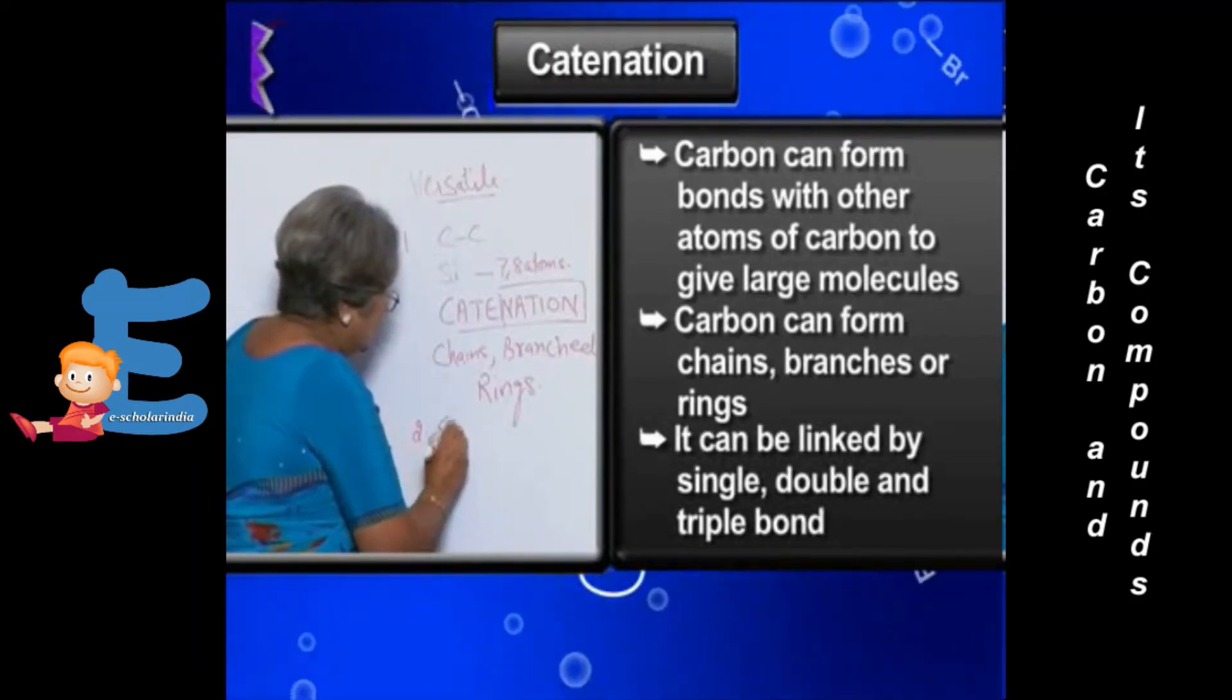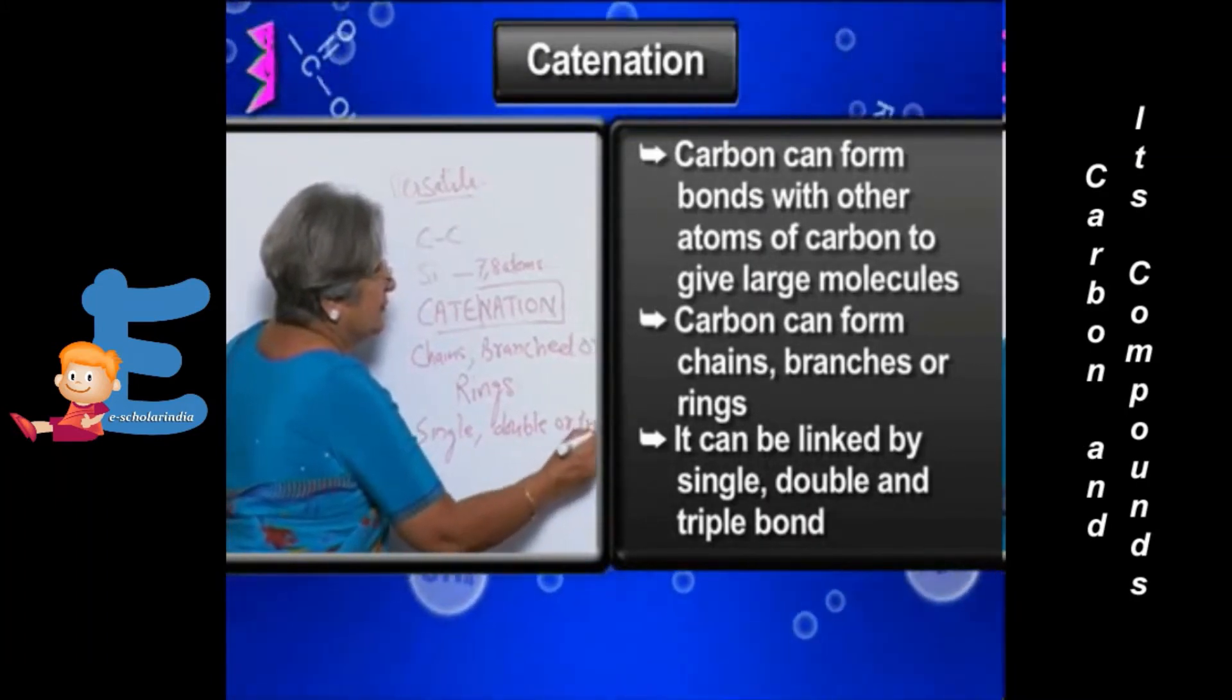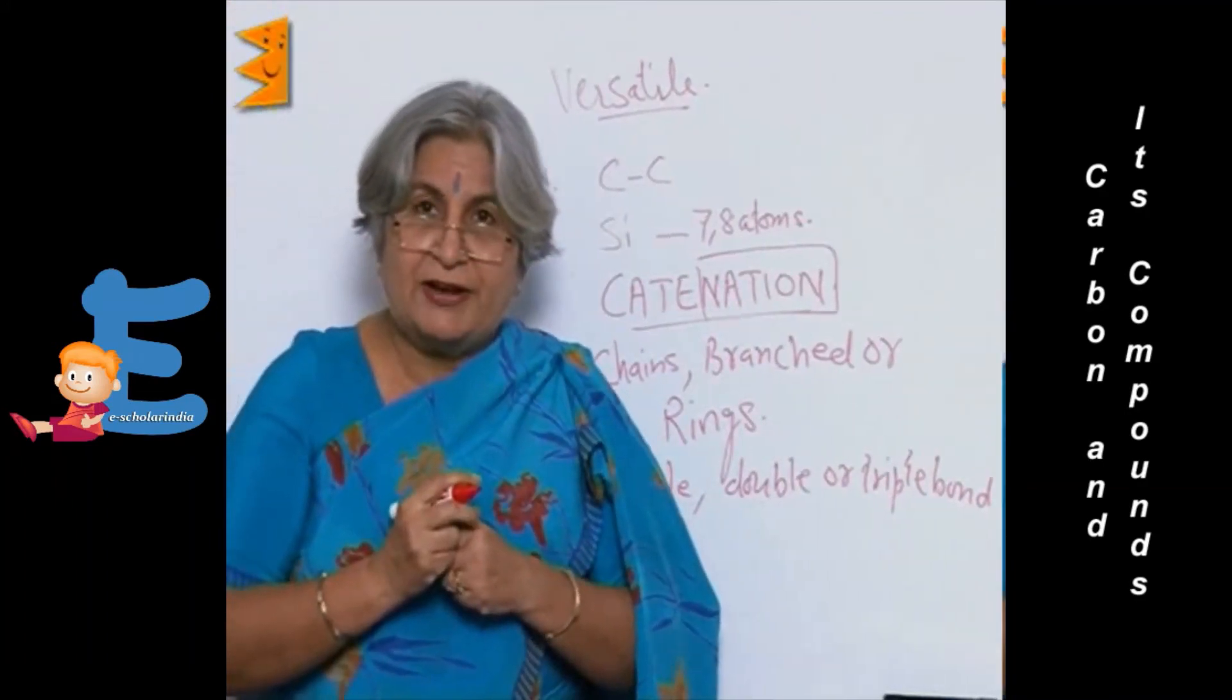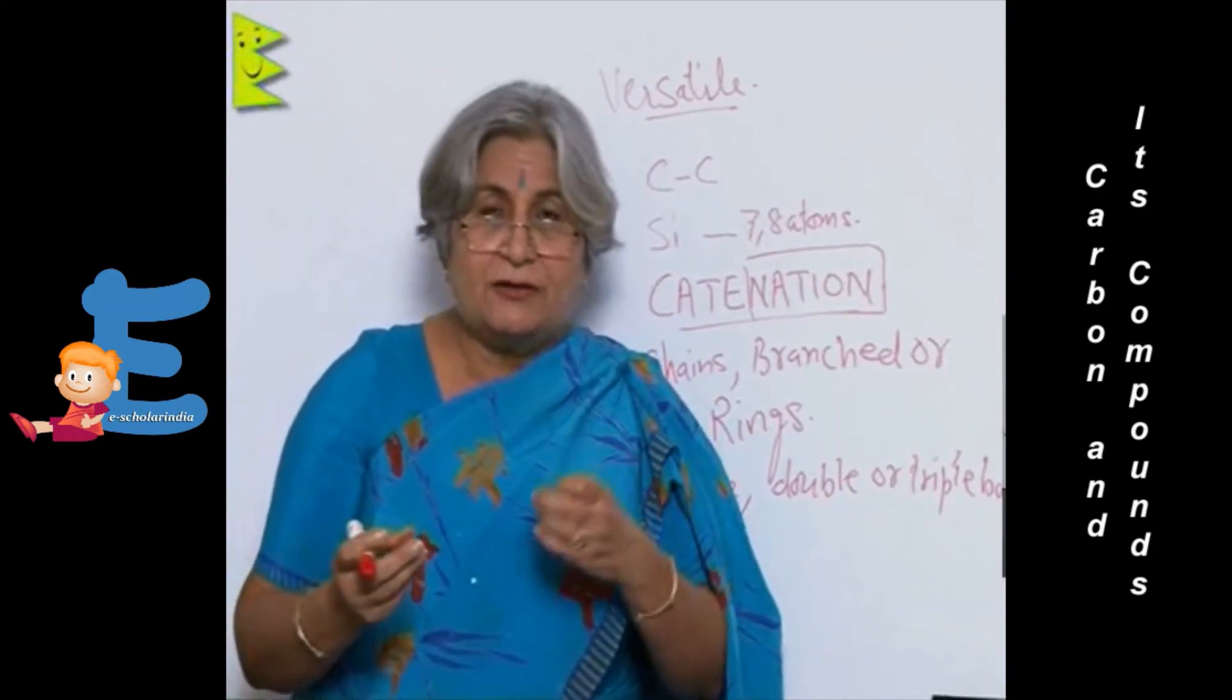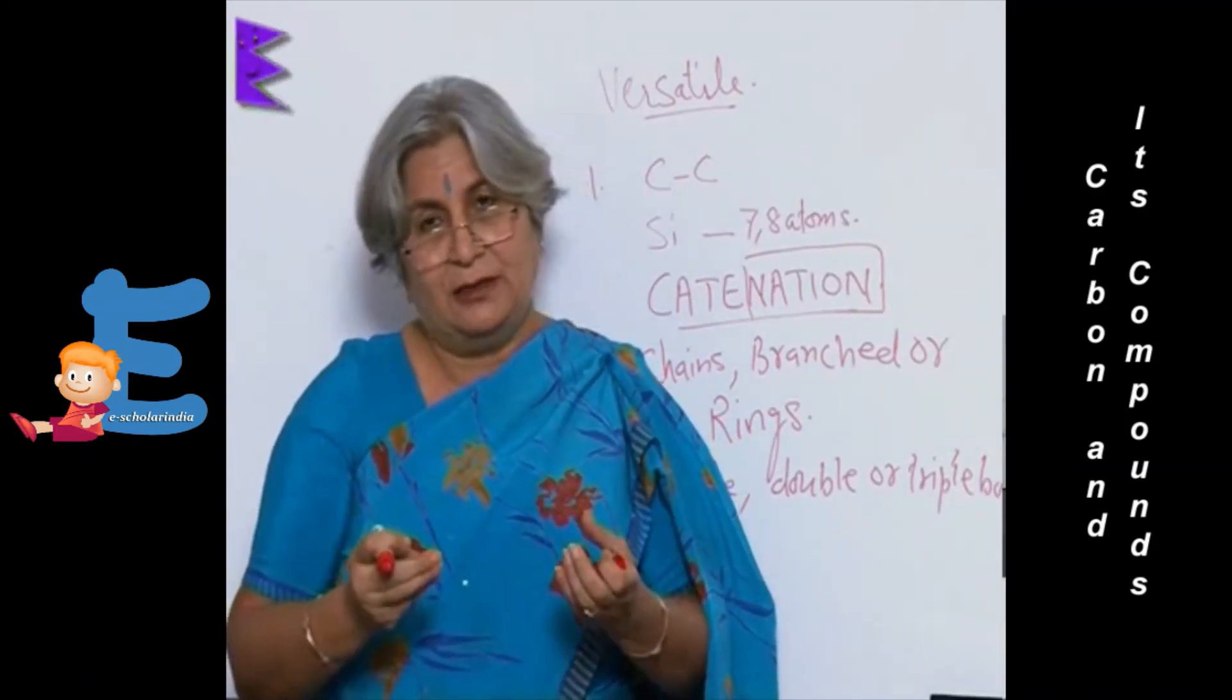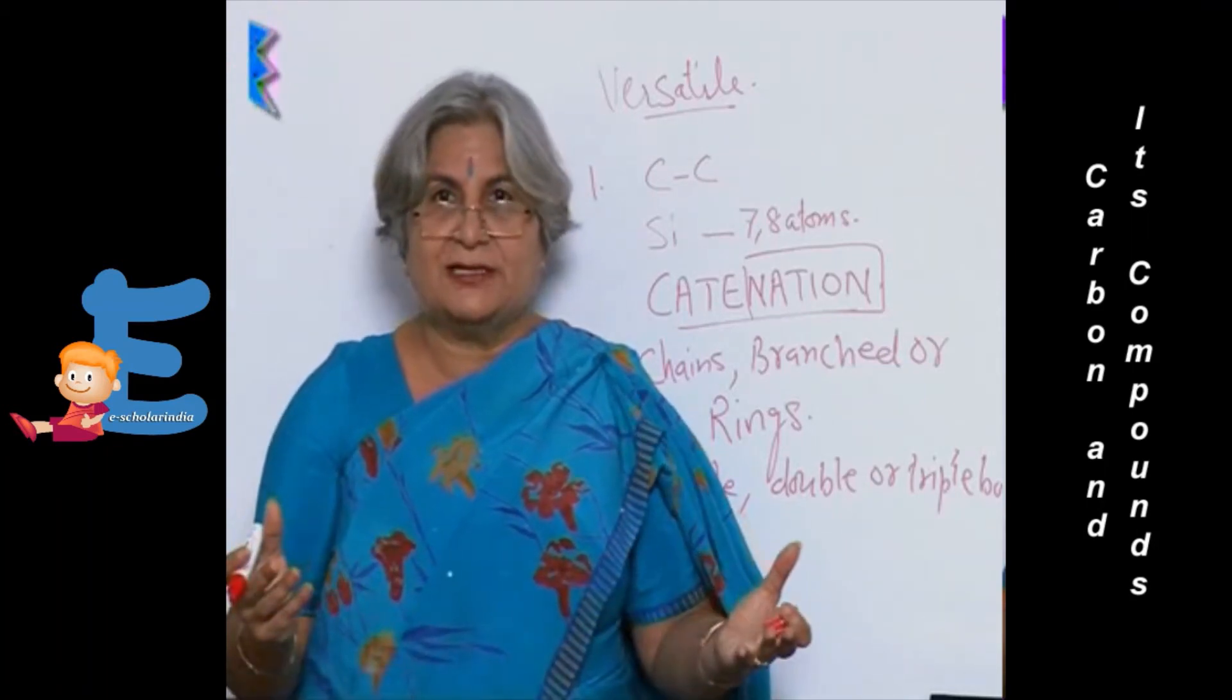it can form single, double, or triple bond. So whatever the requirement, if one electron is not available, it will make double bond. If two are needed, double, and if three are needed, triple. So whatever the situation, accordingly it adapts itself.